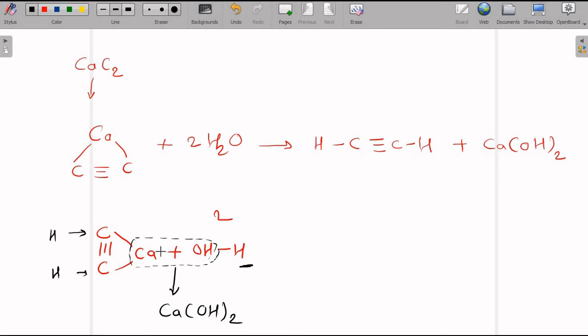So, the product ultimately is carbon triple bond carbon along with the two hydrogen atoms. This is acetylene. So, with the help of this calcium carbide we can only prepare acetylene.